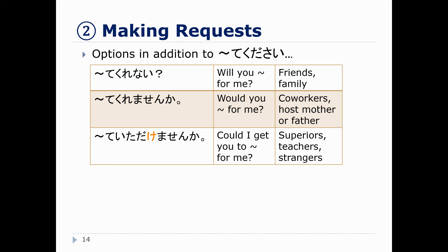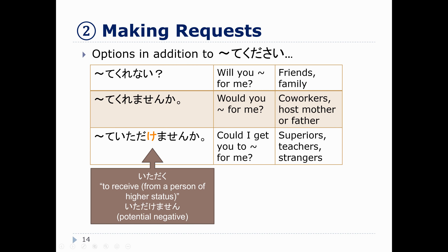Lastly, te-itadakemasenka. This looks pretty similar to a word we have studied before — itadakimasu, which we use before we eat. Itadaku, which we'll talk about more in 2050, means 'you receive something from a person of higher status.' We change it to the potential and negative form: itadakemasenka? It's kind of like in English when we say 'could I get you to do something for me?' We use this when talking to social superiors like your boss at work, your sensei, or somebody we don't know at all. So te-form plus itadakemasenka.